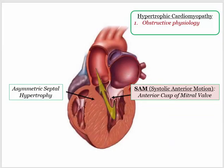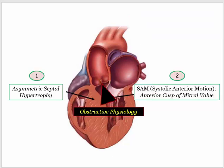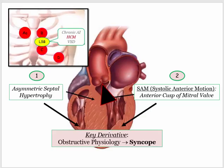The valve leaflet essentially gets caught or dragged into the outflow channel, worsening the obstructive physiology. So it is the combination of septal hypertrophy with systolic anterior motion of the mitral cusp that creates the outflow obstruction. The clinical manifestation of the outflow obstruction is syncope. So if they ask the underlying cause of syncope in a young patient with a systolic murmur at the left sternal border, hypertrophic cardiomyopathy needs to be on your short list.